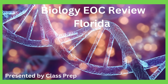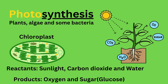Hello, welcome back to my channel, Class Prep. Today I'm going to give you an overview of photosynthesis, which is a process where plants, algae, and some bacteria use energy, carbon dioxide, and water to make food. If you look at the term photosynthesis, photo means light, synthesis means to create, so that means food is made using energy.